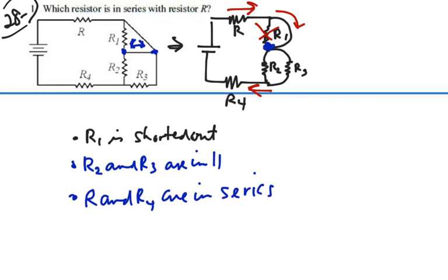So the resistor that's actually in series with R is resistor R4, because they have the same current flowing through them. So that's our answer, R4.